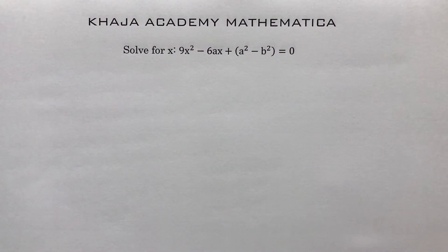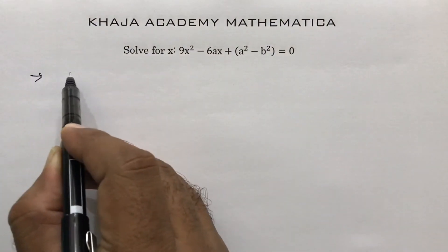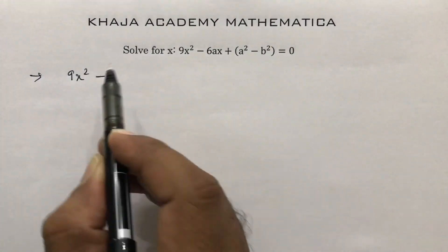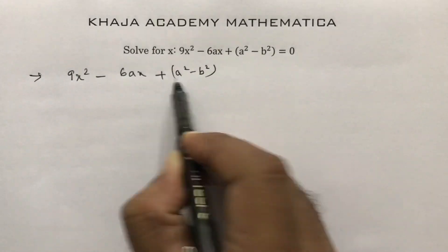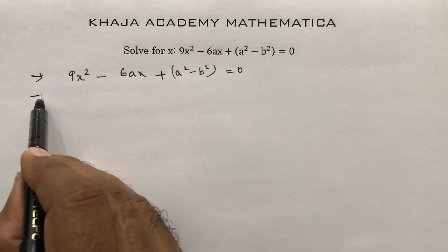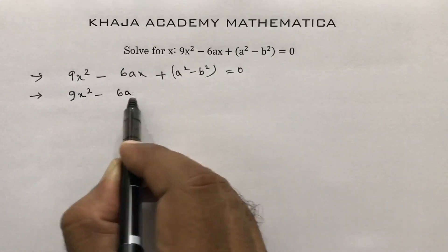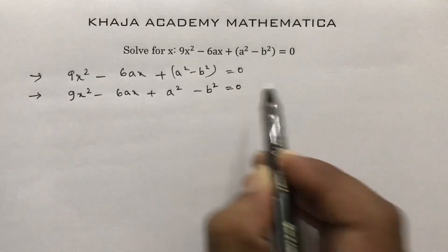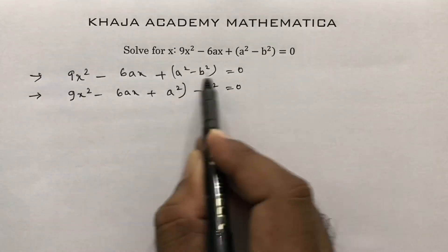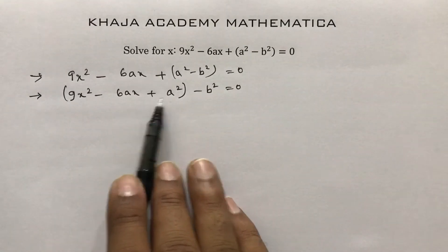Class 10 important problem from quadratic equations — solve for x: 9x² - 6ax + a² + a² - b² = 0. Rearranging: 9x² - 6ax + a² - b² = 0. The first three terms are in the form a² - 2ab + b².